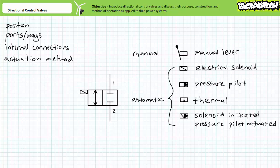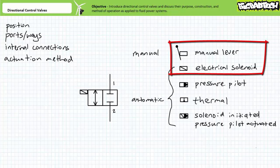This barrage of actuation methods and symbols can be divided into two general families: manual and automatic. Manual methods like levers, pedals, and buttons all require a human operator to physically move the valve into a new position. Automatic methods like mechanical linkages, thermostats, pressure pilots, and electrical solenoids don't necessarily require a human operator but do so automatically. Most of the content in this playlist uses manual levers and electrical solenoids — if you can remember just these two actuation methods, you'll do just fine.